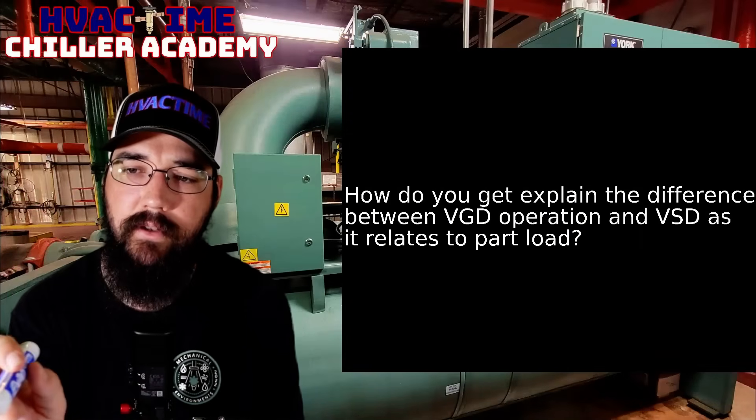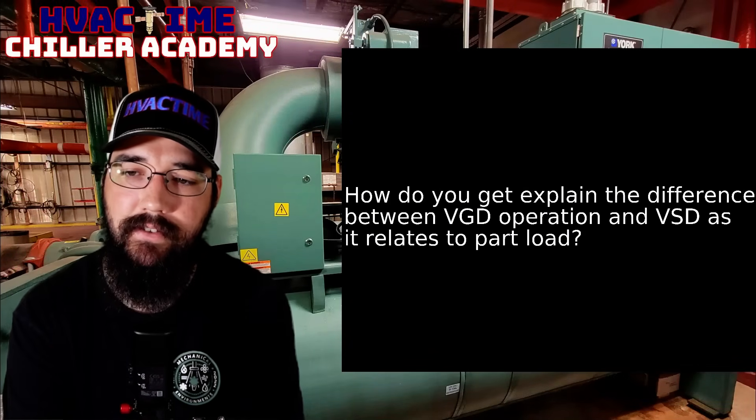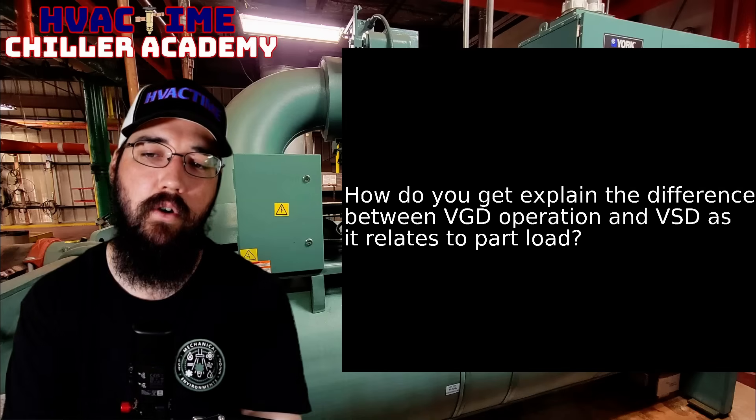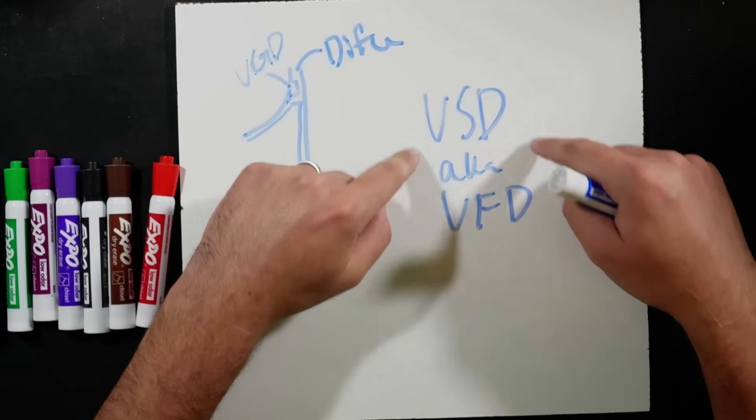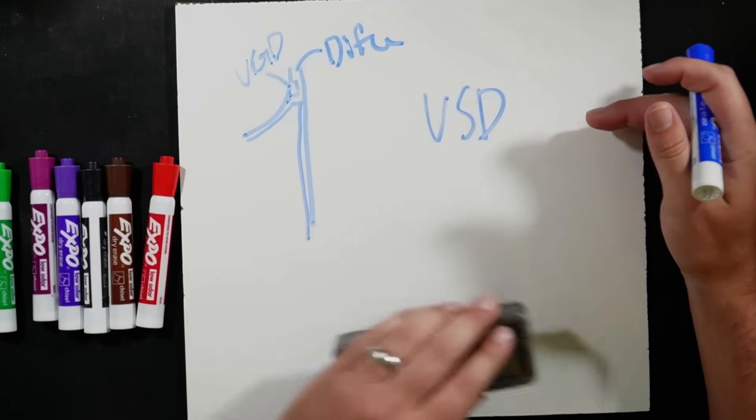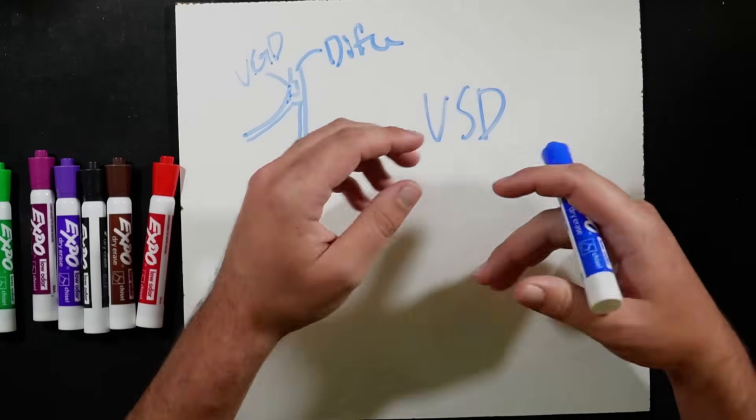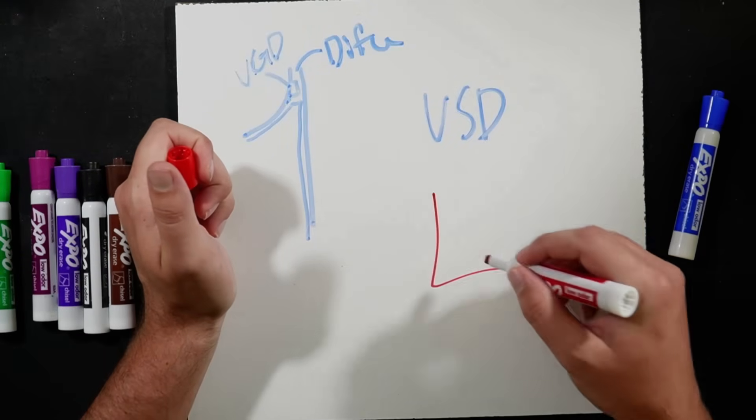How do you explain the difference between VGD and VSD operation in a part load condition? Part of what we can do with the VSD first, we're going to slow the compressor down as much as we can. Now we still have a surge curve to worry about.